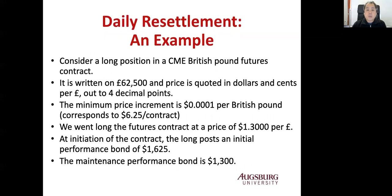Here is an example: consider a long position in a CME British pound futures contract. It is written on 62,500 pounds, and the price is quoted in dollars and cents per pound out to four decimal points. The minimum price increment is 0.0001 pounds, which corresponds to $6.25 per contract. The initial performance bond is $1,625, set by the CME Group, and the maintenance performance bond is $1,300, also set by the exchange.